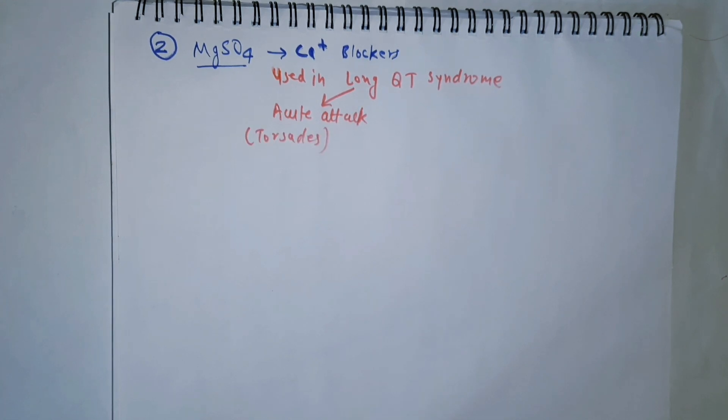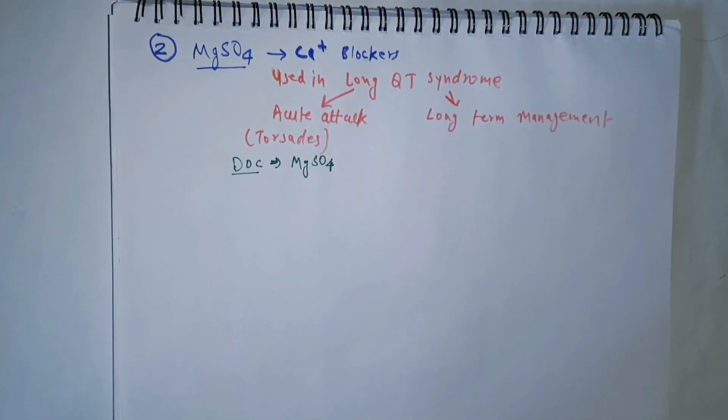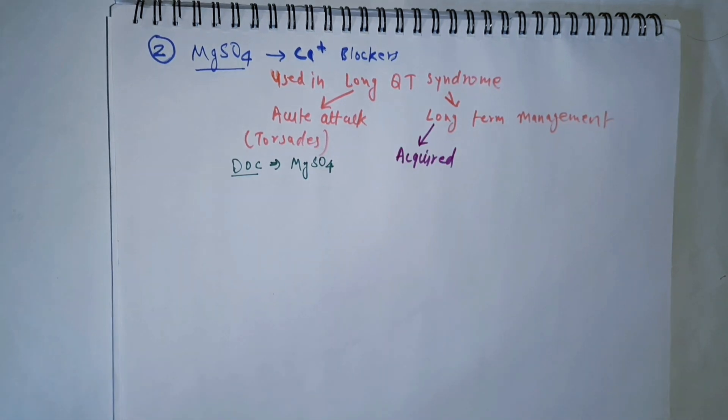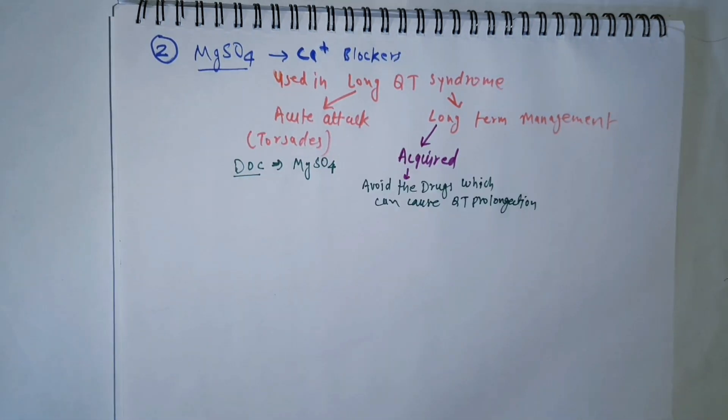In case of acute attack of torsades de pointes, our drug of choice is magnesium sulfate. For long-term management in acquired conditions, we advise patients to avoid drugs that can cause QT prolongation.